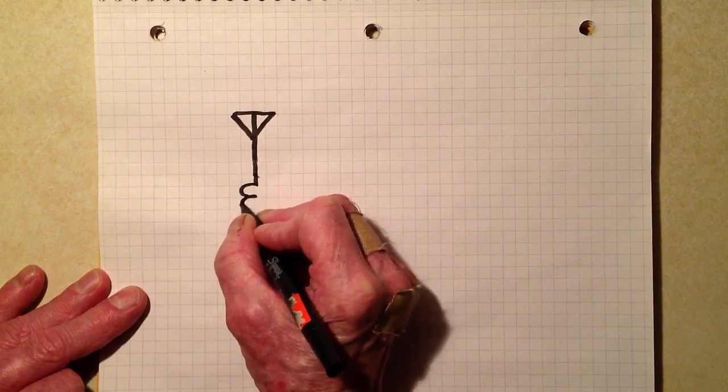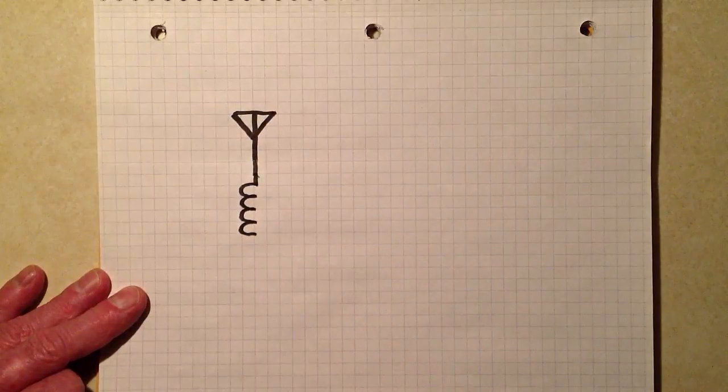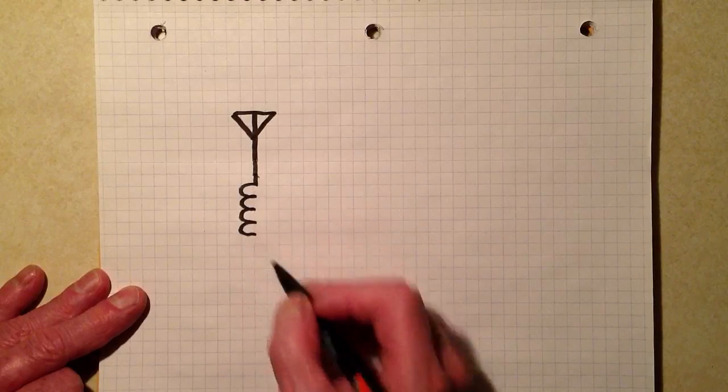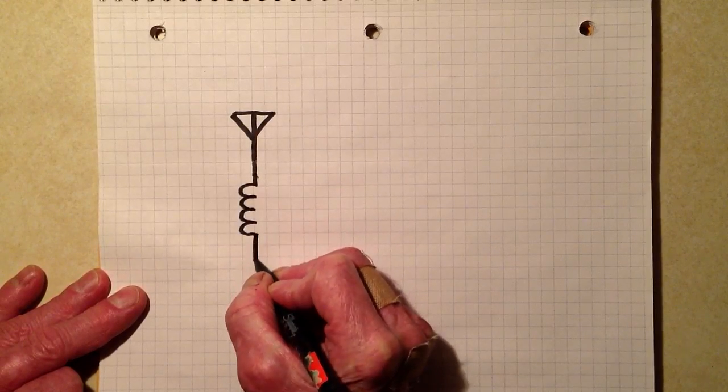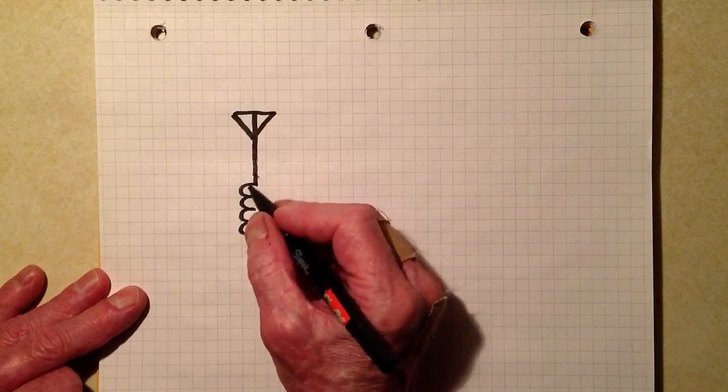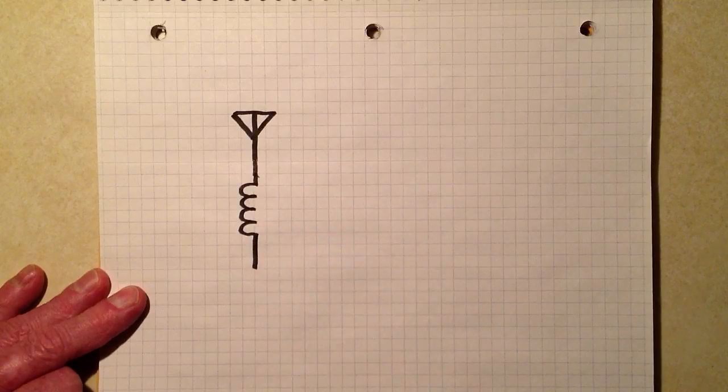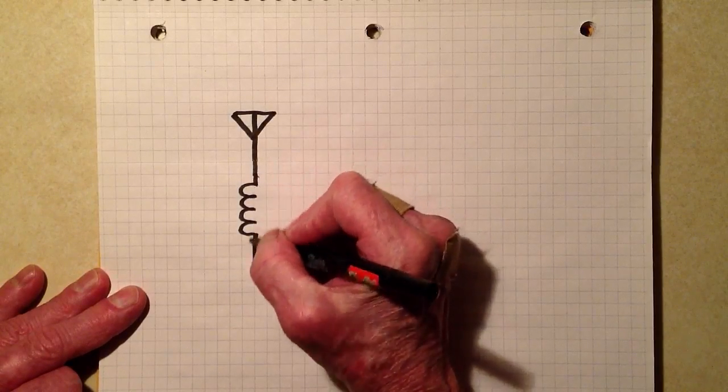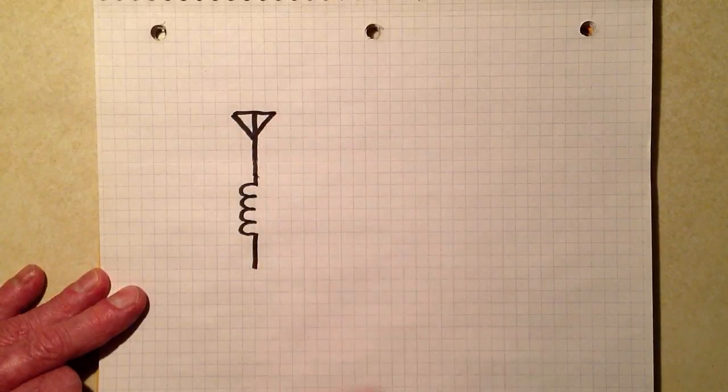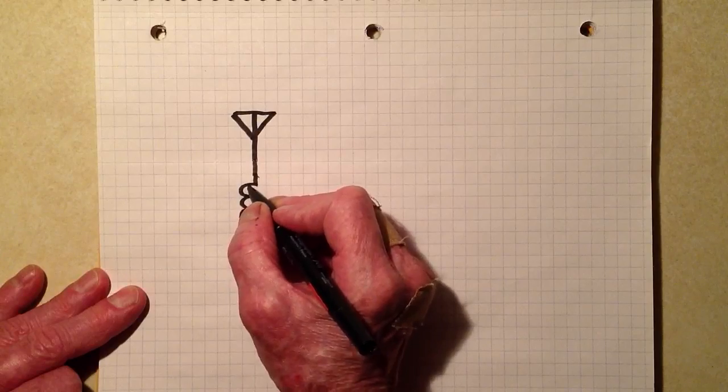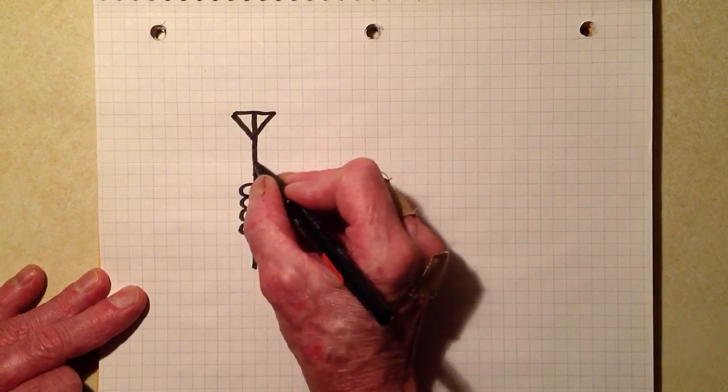Then there is an inductor. Now you'll see I'm using a slightly different inductor symbol than the book does. It uses a loopy inductor, I'm using a non-loopy inductor. Either one will work. When I draw by hand, I prefer this. It's just a little easier to do. Now this little inductor, by the way, is an air core inductor, although it could be a powdered iron inductor if you wanted it to detect low frequencies.